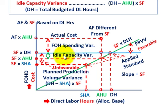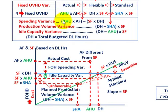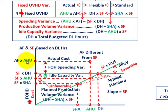Let's go back to our table to see how the formulas fit in. Our spending variance: actual hours used times the actual fixed rate versus the standard fixed rate times the denominator hours. You can see it right there — actual fixed rate times actual hours used versus standard fixed rate times total denominator hours. That's your spending variance.